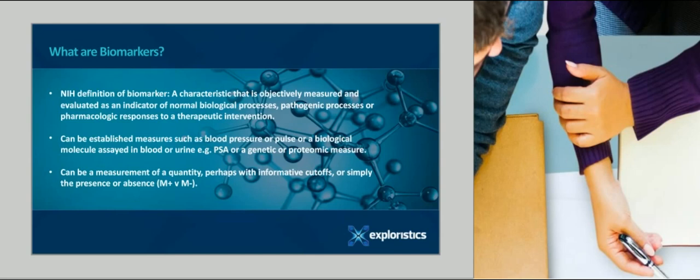Examples of classical biomarkers are blood pressure or pulse or biological molecules that can be measured in a body fluid such as blood or urine. For example, prostate specific antigen, PSA, are biomarker relevant in prostate cancer. But, the last few 10 or 15 years, have seen newer biomarkers such as genetic or proteomic measures that make appropriate analysis of biomarkers quite a buzzy area.